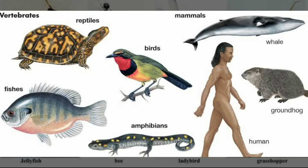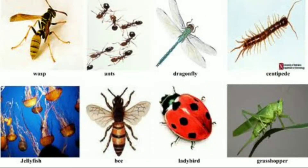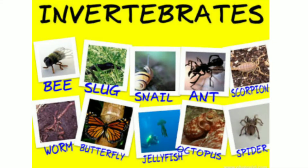Animals such as snails, cockroaches, and earthworms do not have a vertebral column, and therefore they are invertebrate animals.